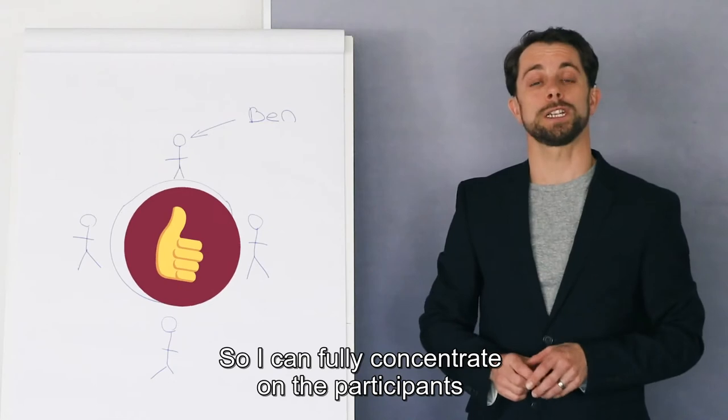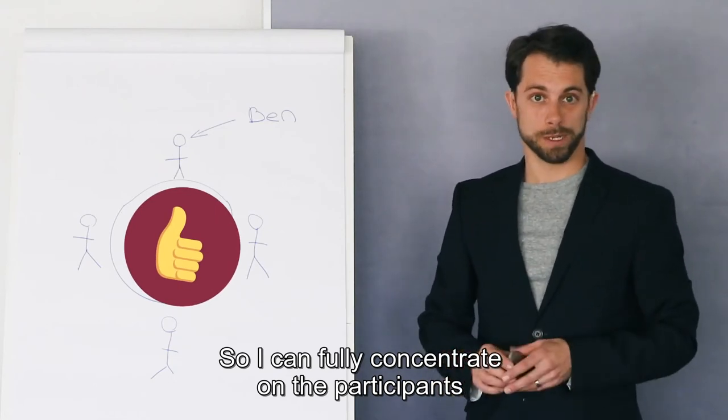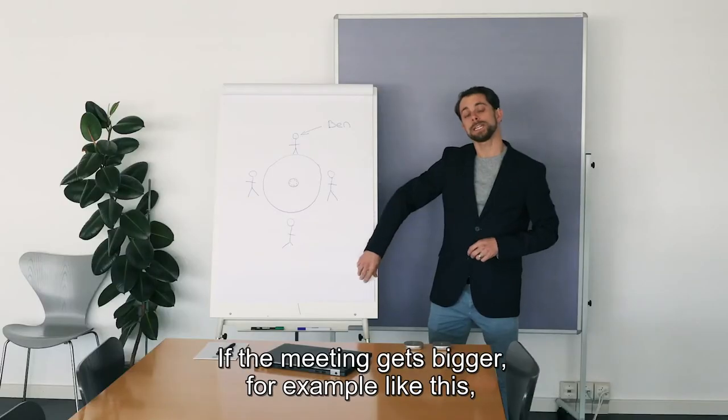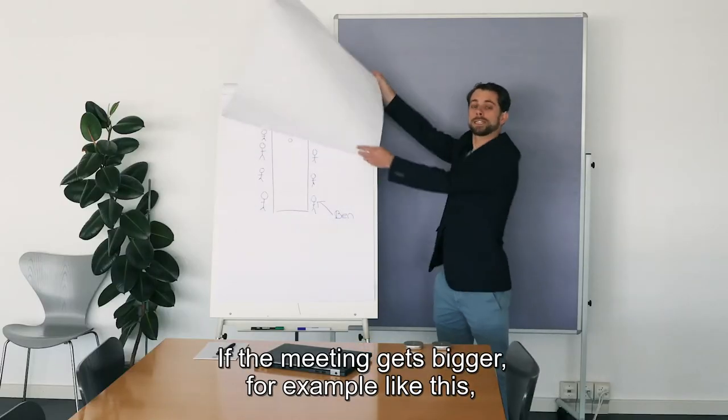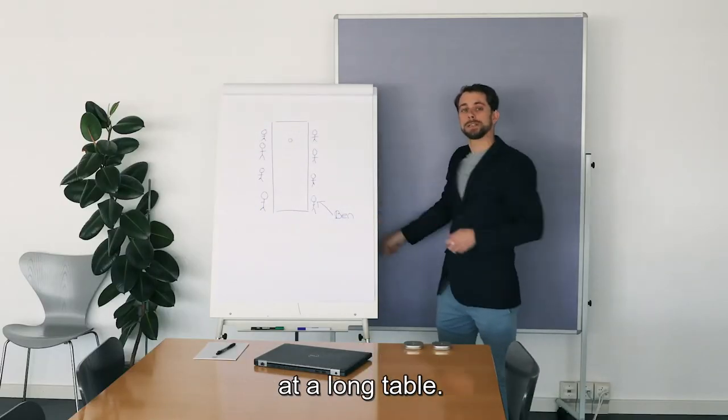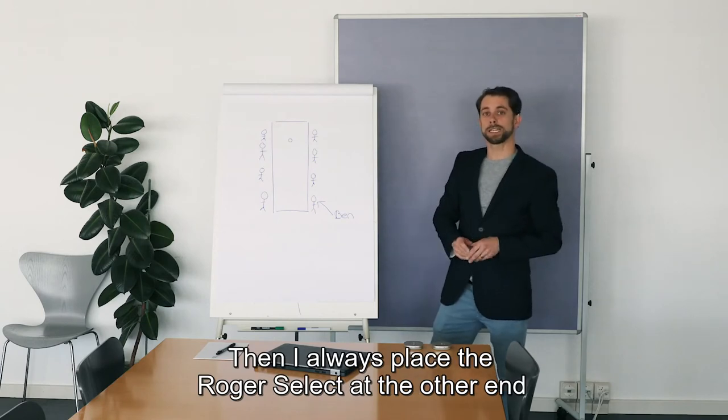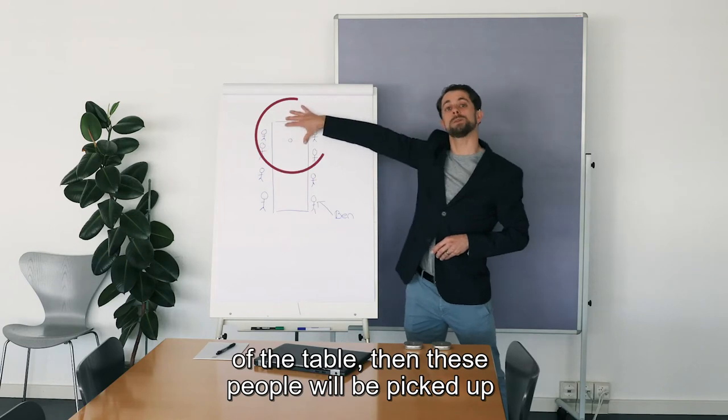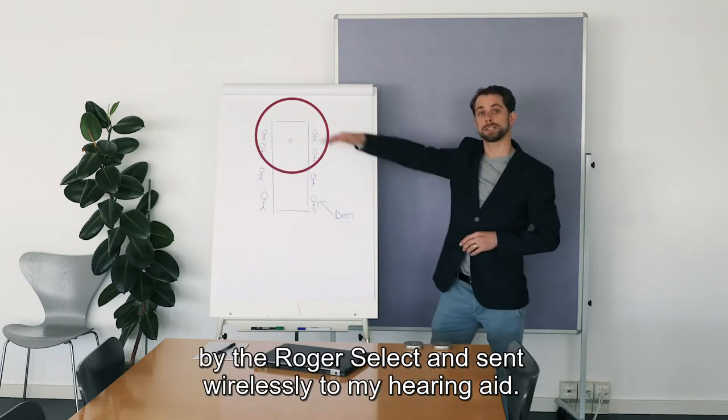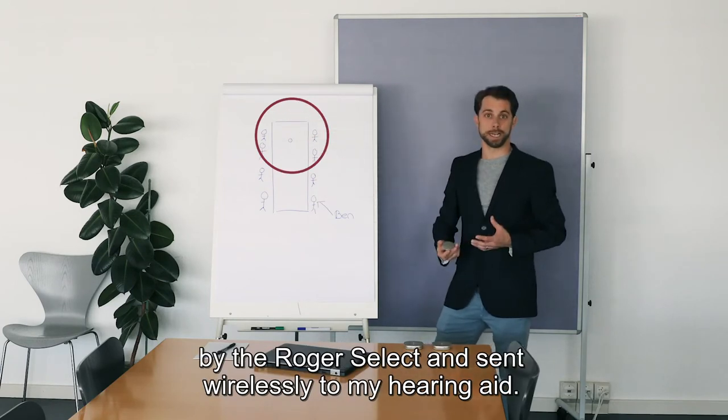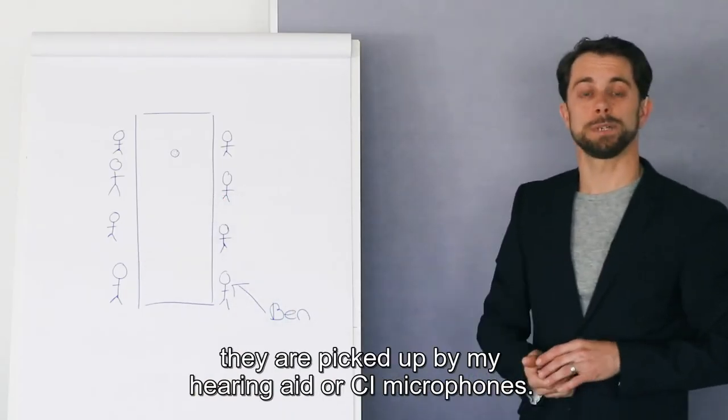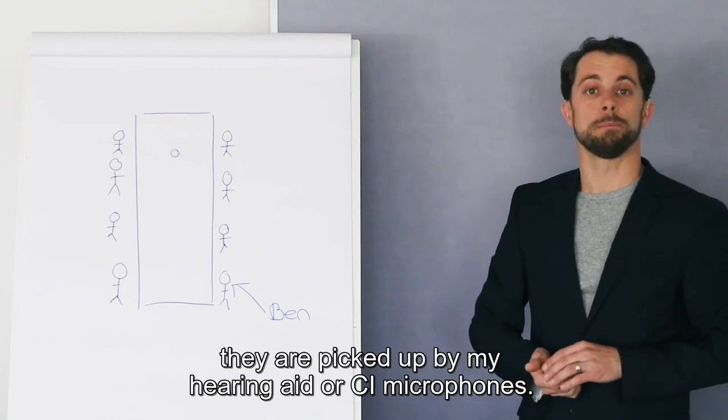So I can fully concentrate on the participants sitting close by at the table. If the meeting gets bigger, for example at a long table, then I always place the Roger Select at the other end of the table. Then these people will be picked up by the Roger Select and sent wirelessly to my hearing aid. The people sitting close to me are picked up by my hearing aid or CI microphones.